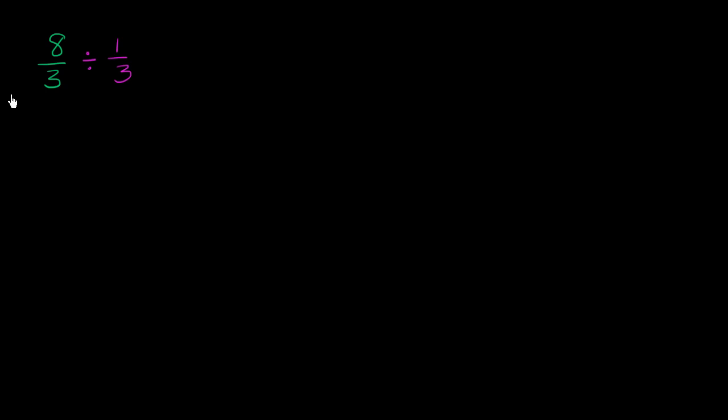Let's think about what it means to take 8 thirds and divide it by 1 third. So let me draw a number line here. So there is my number line. This is 0. This is 1. And this is 2. Maybe this is 3 right over here.